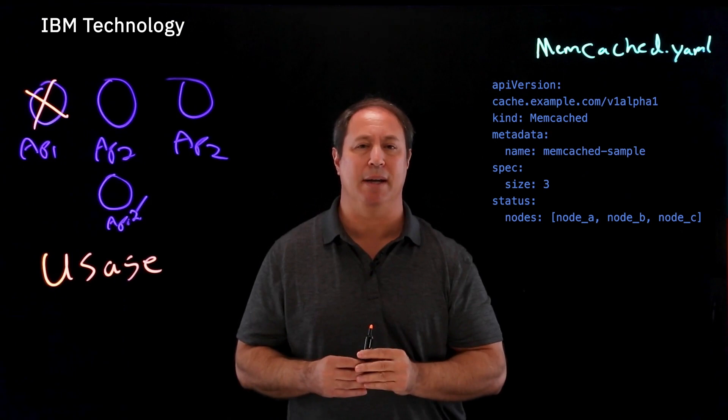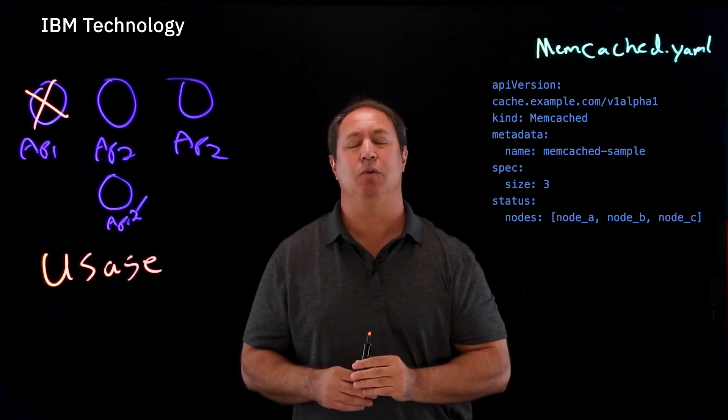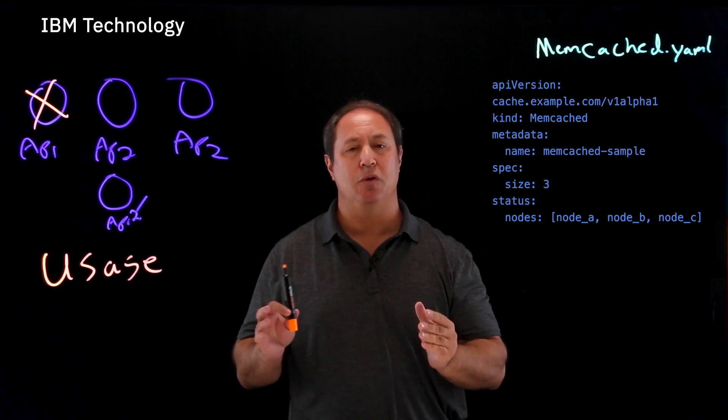kubectl apply -f and the name of the file. And those same commands that you would use for regular Kubernetes resources will work for the custom operators. So usage just feels like the rest of Kubernetes.